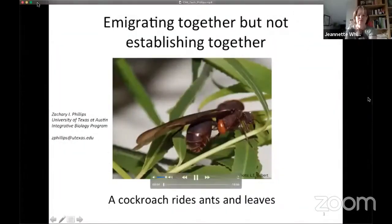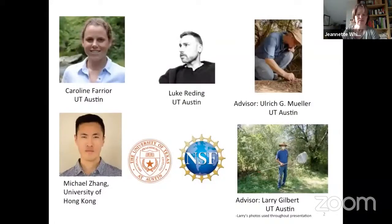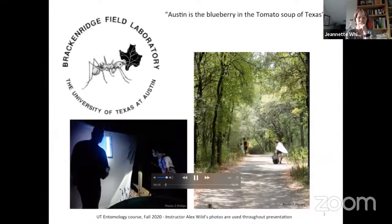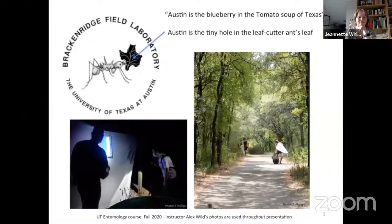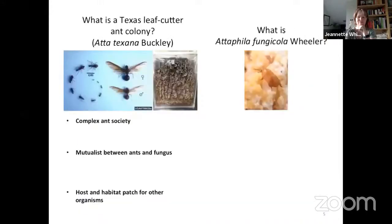Hi everybody, I'm Zach Phillips, a PhD candidate at UT Austin in Texas. Thanks to the American Society of Naturalists for hosting this virtual conference and to everybody tuning in. These are my collaborators on different parts of the work: Luke, Carolyn, and Michael, and my two advisors Ulrich and Larry. A special thank you to Brackenridge Field Lab in Austin where we've conducted most of our field work. There's a saying — Austin is the blueberry in the tomato soup of Texas — but on the Brackenridge Field Lab logo, Austin is the tiny hole in the leafcutter ant's leaf, which situates us geographically at least on the leaf. Thank you to Cat Metro buses for transporting me and sometimes thousands of ants and cockroaches to and from Brackenridge.